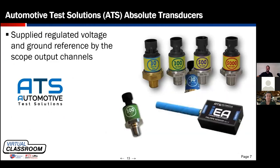Automotive Test Solutions is a company I work closely with — I'm not here to push a specific tool, but they make a very hardy device that works quite well. They have an abundance of transducers: a 30-inches-of-mercury vacuum transducer, a 500 psi pressure transducer, and even a 5,000 psi version for those dealing with heavy-duty equipment or hydraulics — this will definitely measure and display high pressure accurately on your scope screen.